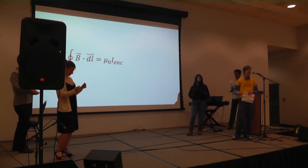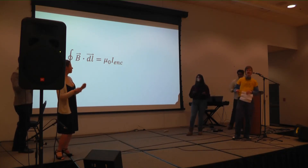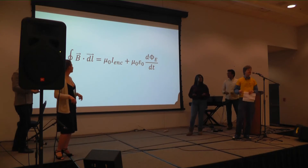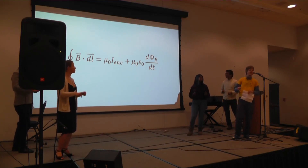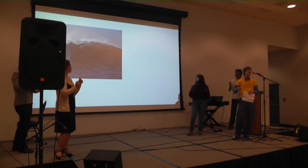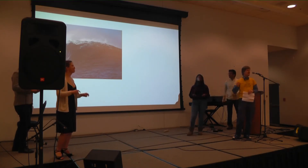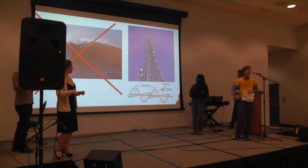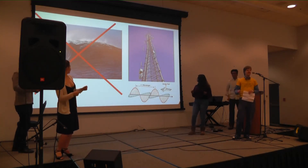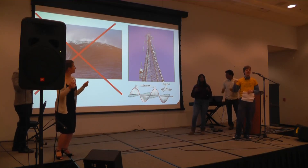Here's the hard one. Now Ampere said integral B dot dl equals mu naught times i, and that's true. But Maxwell said mu naught times epsilon naught times a change in flux in E is there too — gives you waves. Not the kind that's in the ocean, talking electromagnetic motion, coming in waves.